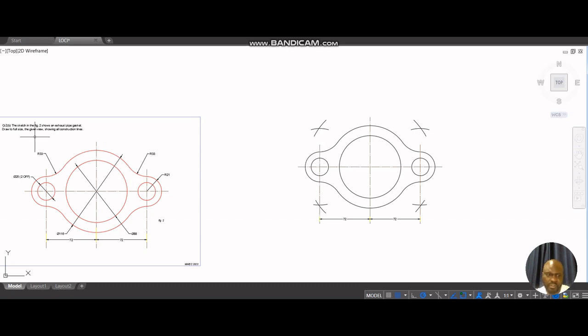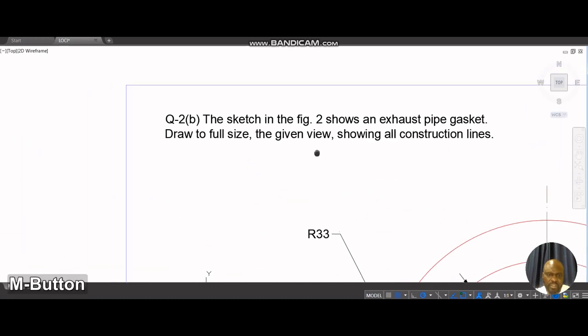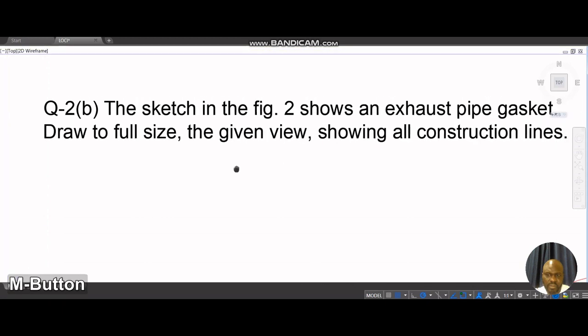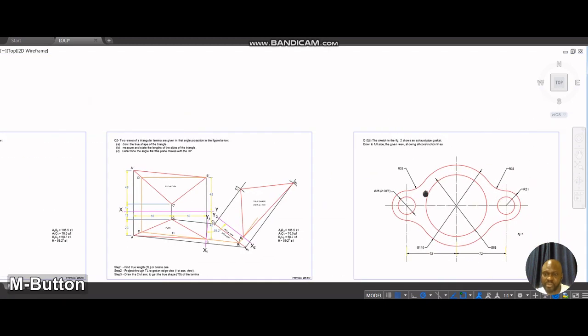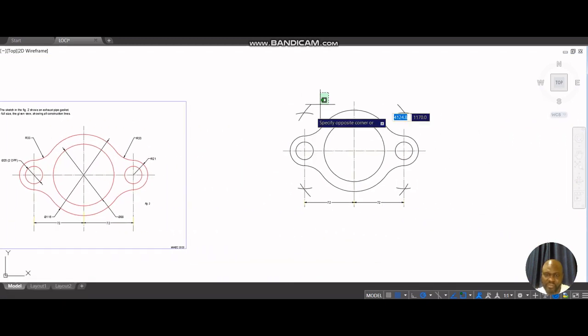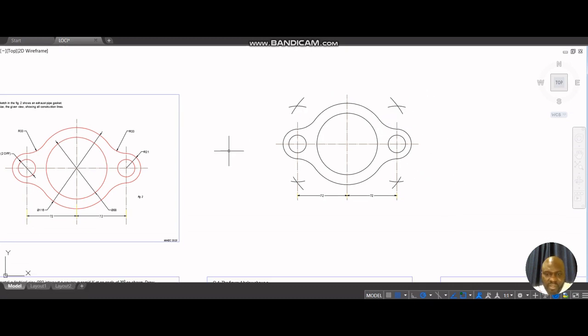But of course, the instruction says draw the full size the given view showing all construction lines. So if your examiner doesn't find all of these construction lines, you're going to score zero. So you have to leave them the way they are. So that's what we have, and I'm just going to highlight all the drawing now that I have cleaned up everything.